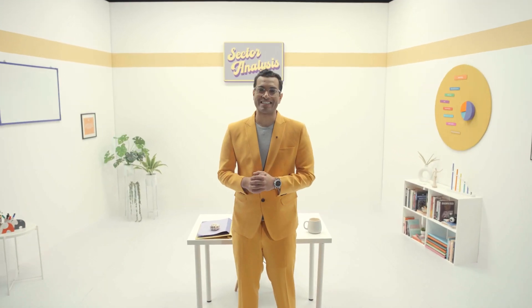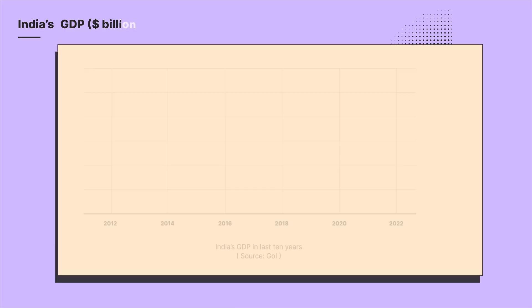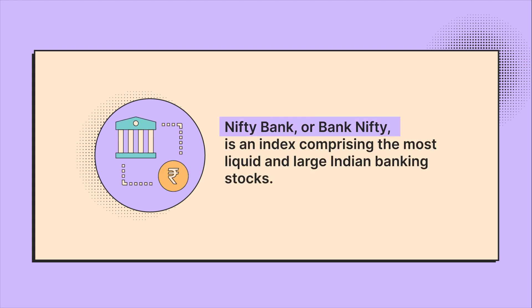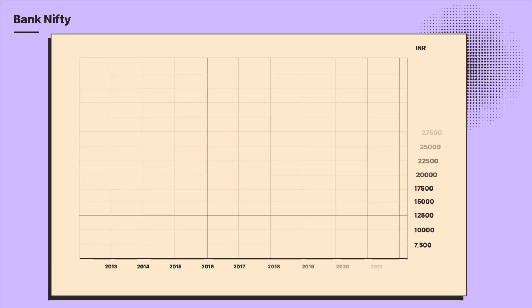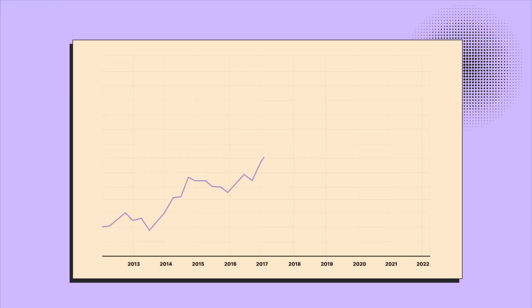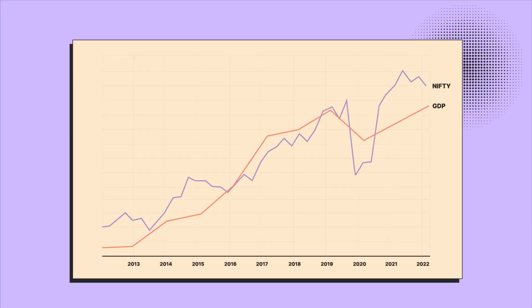Hi everyone, welcome to today's class. I will start by showing you two specific graphics. Take a look at the GDP of India and how it has grown over the years. Now compare this with the graph of Bank Nifty. You will see a very clear correlation between the growth of the banking sector and the growth of India. So today we are talking about the banking sector.